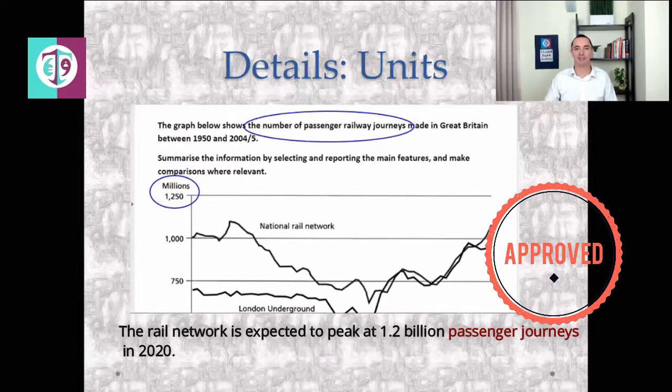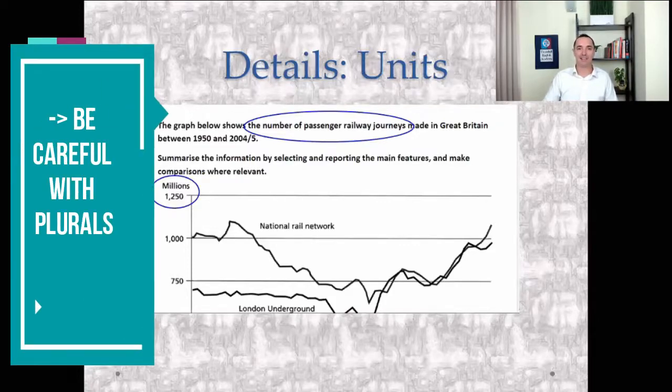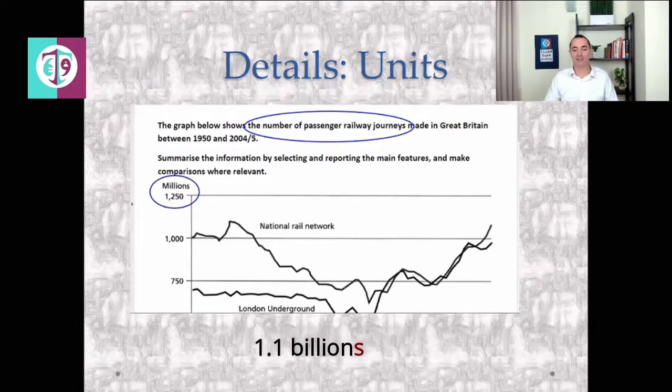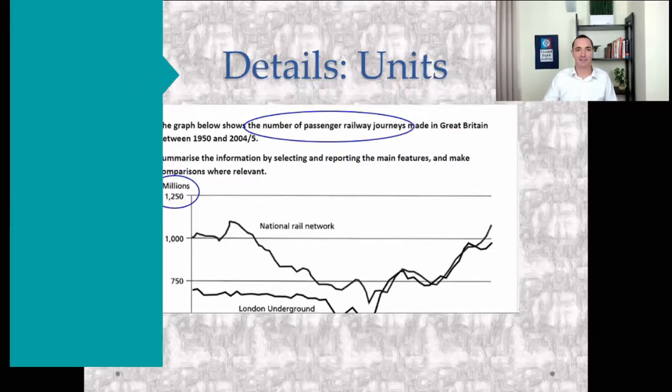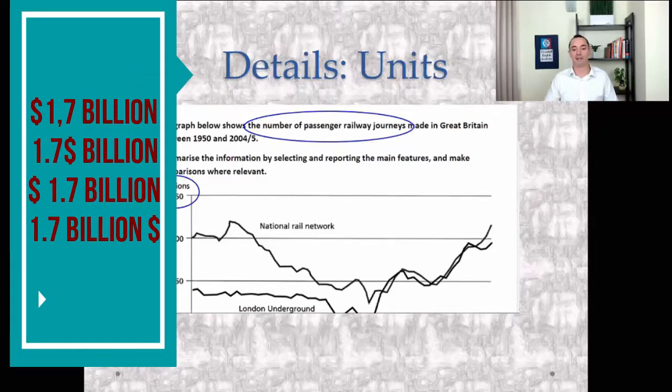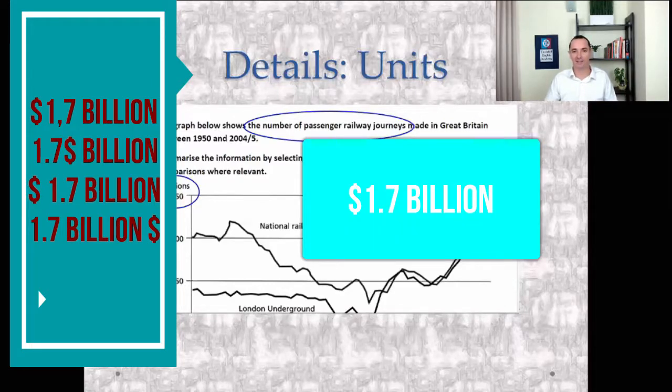Another common mistake is writing numbers as plurals when they shouldn't be. Billions instead of billion, millions instead of million. Here's an example. The national rail network is expected to reach a peak of approximately 1.1 billion journeys. This is a problem. Again, once or twice, not too bad. If you have it a lot, this is going to lower you to a band four for inaccurate detail. The same goes for amounts of money. Here's an example. 1.7 billion. This is how it should be. There's only one way it should be written, and that's what you need to do.